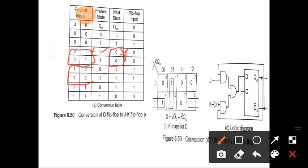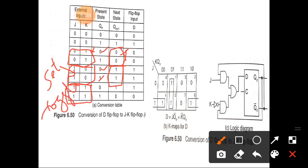If J and K values are 1,0, J equals 1 means it is a set condition, so the next state will be 1 regardless of whether the present state is 0 or 1. For the last case, if J and K are 1,1, it is a toggle condition: if the present state is 0, the next state is toggled to 1; if the present state is 1, the next state becomes 0.